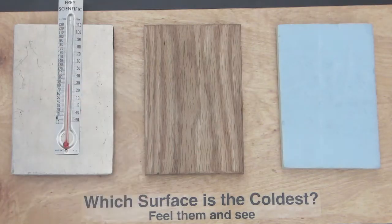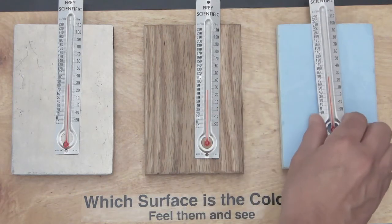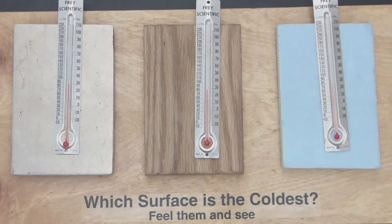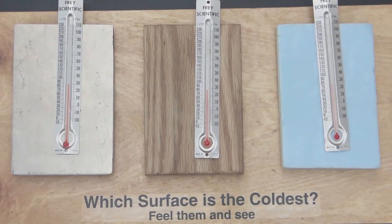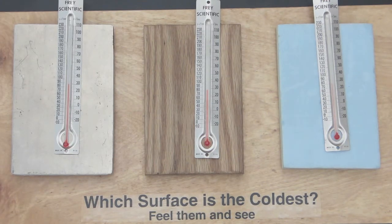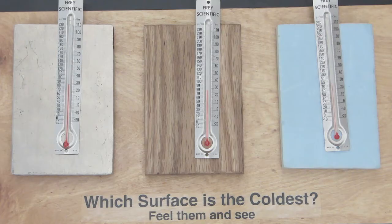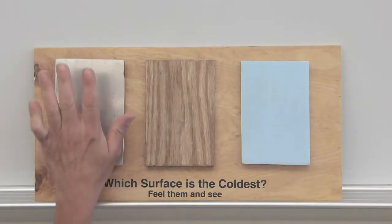Eventually my students will discover that in this case, their sense of touch is deceiving. Even though the blocks feel to be at different temperatures, when we check them with the thermometer, we'll find they're all at the same temperature, which is the temperature of the room.